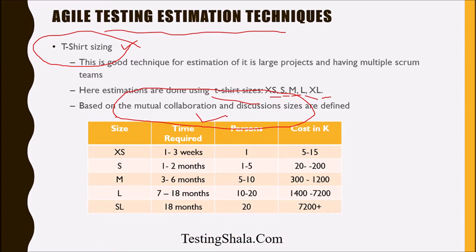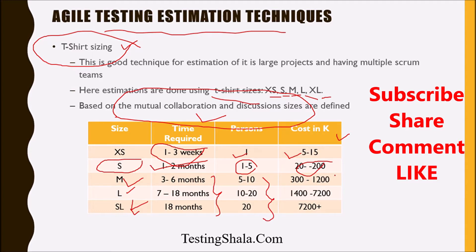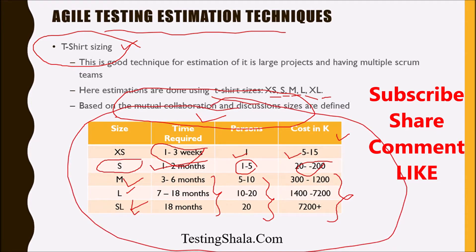For example, the sizes are XS, S, M, L, and XL. For a user story of size XS, implementation can take one to three weeks with one person, and the cost could be $5K to $15K. For size S, it can take one to two months requiring one to five people. Each size has a clear definition of time required, associated resources, and cost involved in implementing that kind of user story.